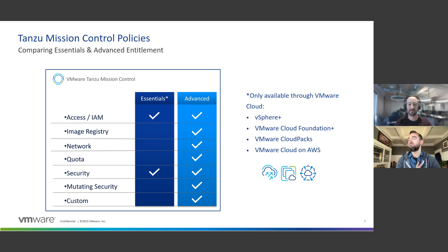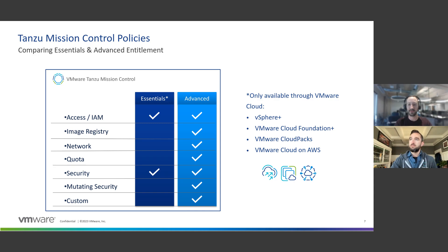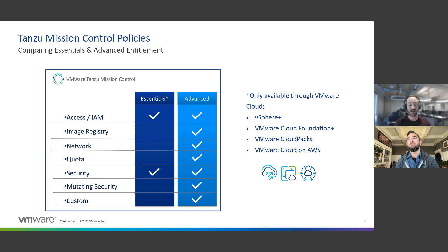For identity, SAML is the common integration — whatever identity provider you're using today. For those just getting started with a trial you can use email accounts, but that won't scale to enterprise grade. We also recently announced the self-managed version of Tanzu Mission Control. The SaaS version is hosted and maintained by VMware; the self-managed version lets you download and deploy the software in your own networks and environments. For internet-restricted, disconnected, or air-gapped environments you can now deploy self-managed TMC — very useful for Amazon GovCloud or sovereign cloud customers.